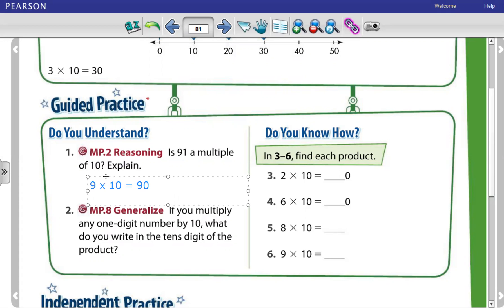And 10 times 10 equals 100. 10 times 1 equals 10, with the 0, 100. So is the 91 a multiple of 10? No, it's not a multiple of 10.